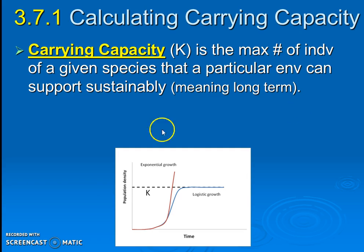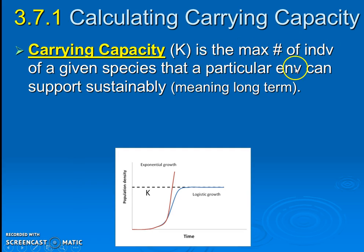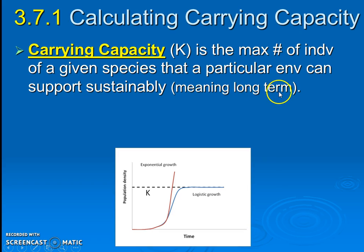We're going to refer to carrying capacity — this maxed-out leveling — as K. It is the maximum number of individuals of a given species that a particular environment can support sustainably, meaning over the long term without damaging the environment. If you're not sure what sustainable means, you need to go back to section 3.2 and revisit that definition because it has a very specific meaning.